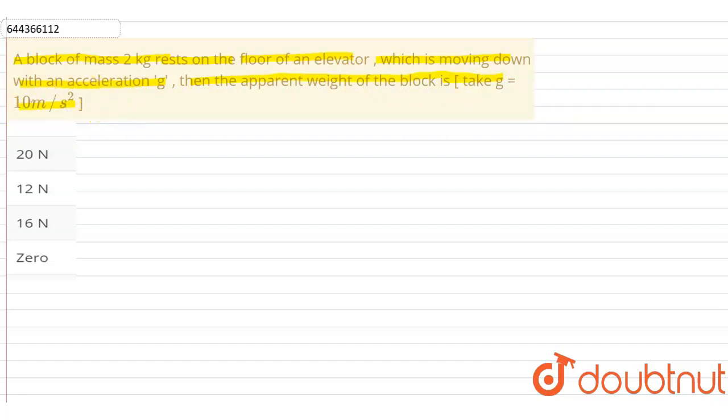So according to the question, a block of mass 2 kg rests on the floor of an elevator which is moving down with an acceleration g.